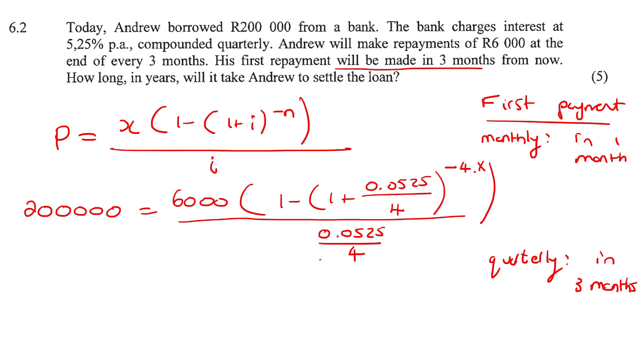So that's gonna end up giving us 200,000 multiplied by 0.0525 over four. And then at the bottom, we're gonna have 6,000. Then on the right-hand side, let's quickly go type this on the calculator.